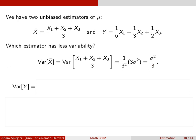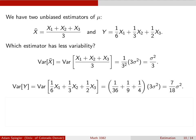Now let's compare that to the variance of the weighted average. Using the same properties — pulling out 1/6 gives (1/6)² = 1/36, pulling out 1/3 gives 1/9, and pulling out 1/2 gives 1/4 — and each variance is sigma squared. So the variance of the weighted average is (1/36 + 1/9 + 1/4) times sigma squared, which equals 7/18 sigma squared.